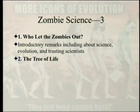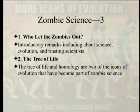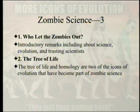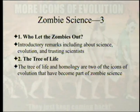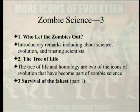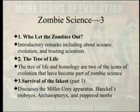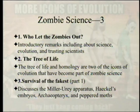The next chapter is about the tree of life — thinking about putting all animals, plants, and bacteria into some kind of genealogical setting. The tree of life and homology are two icons of evolution that have become part of zombie science. Chapter 3 includes the Miller-Urey apparatus, Haeckel's embryos, Archaeopteryx, and peppered moths. These are called icons because you actually have images — they're not just theories and stories, they're pictures.